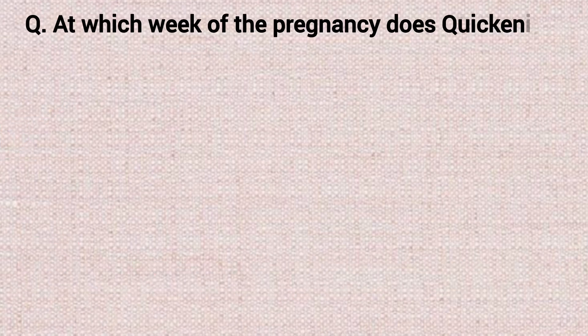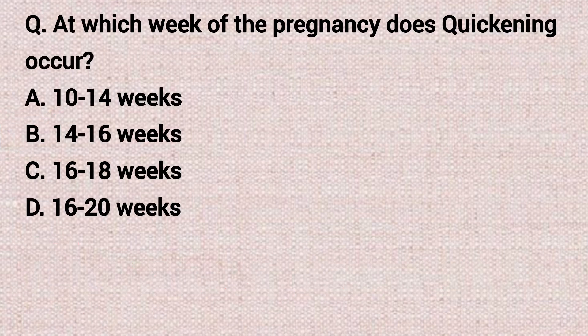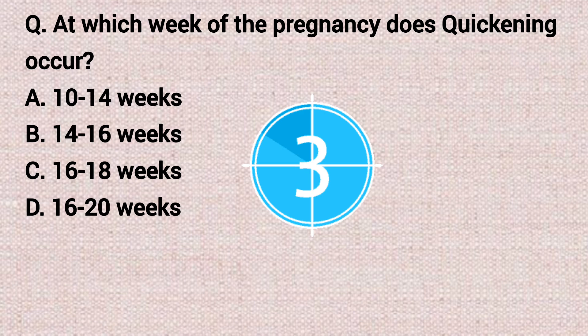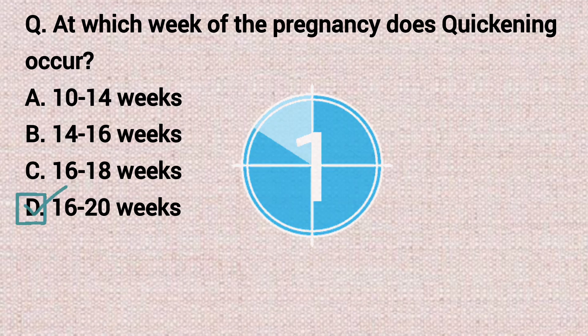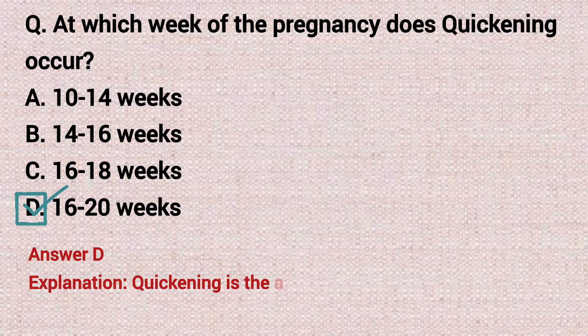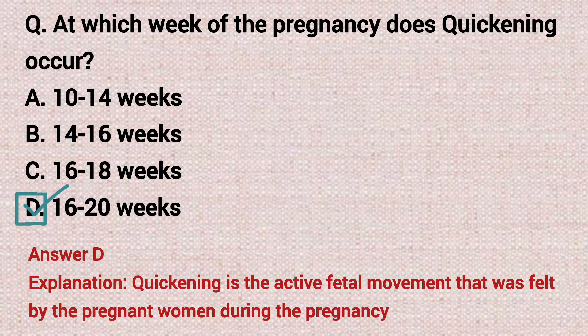The next question: at which week of pregnancy does quickening occur? Option A: ten to fourteen weeks. Option B: fourteen to sixteen weeks. Option C: sixteen to eighteen weeks. Option D: sixteen to twenty weeks. The correct answer is option D, sixteen to twenty weeks.